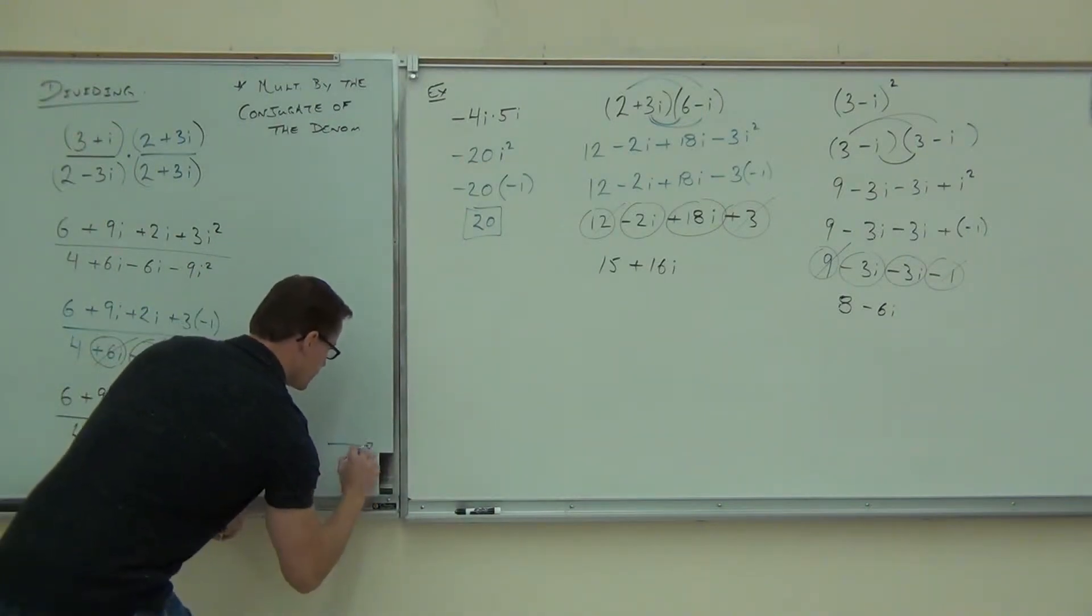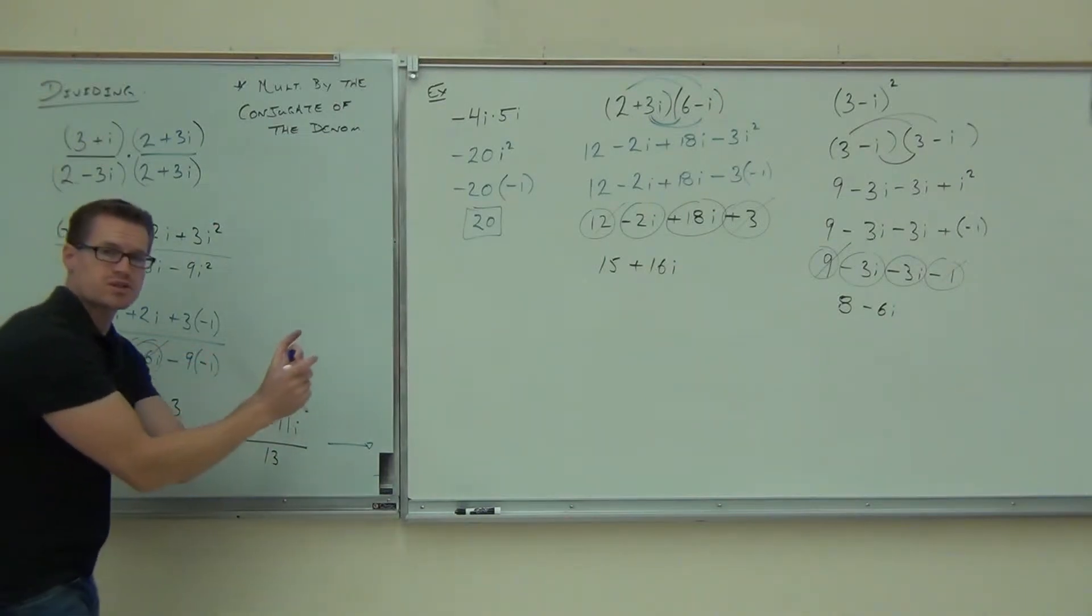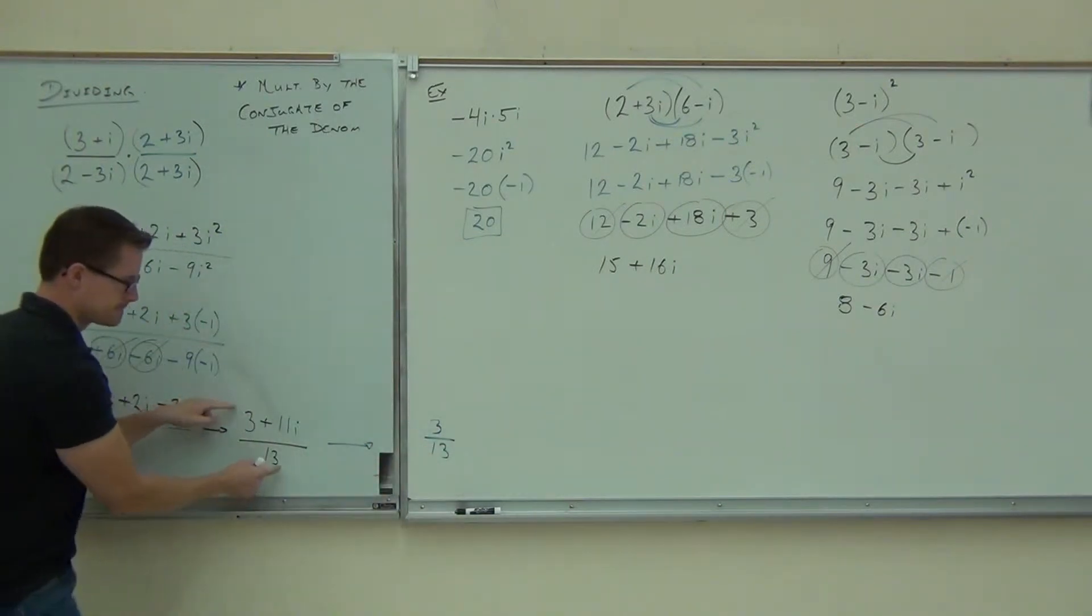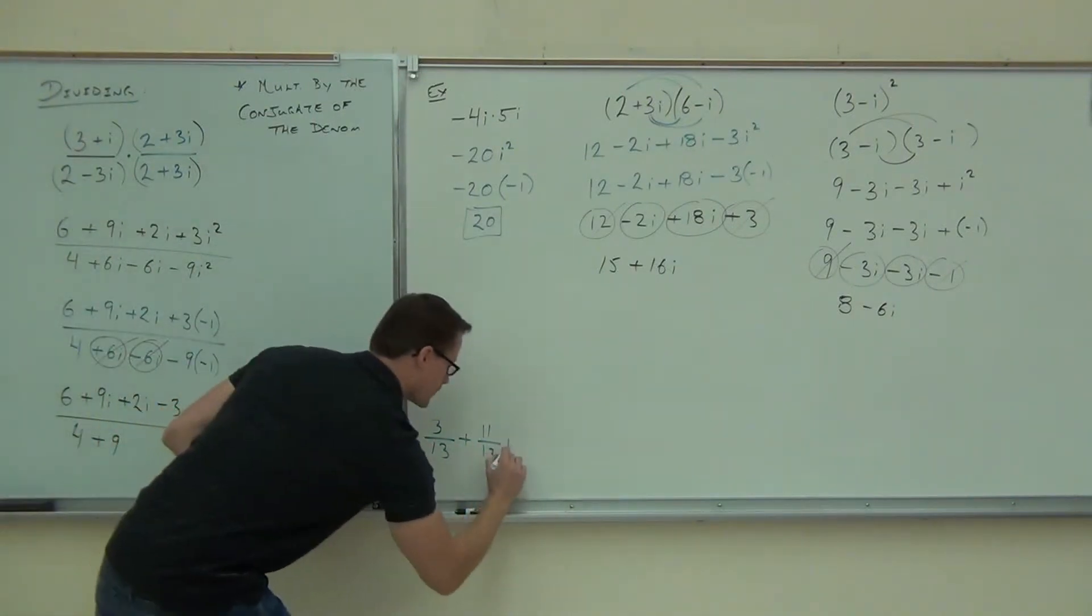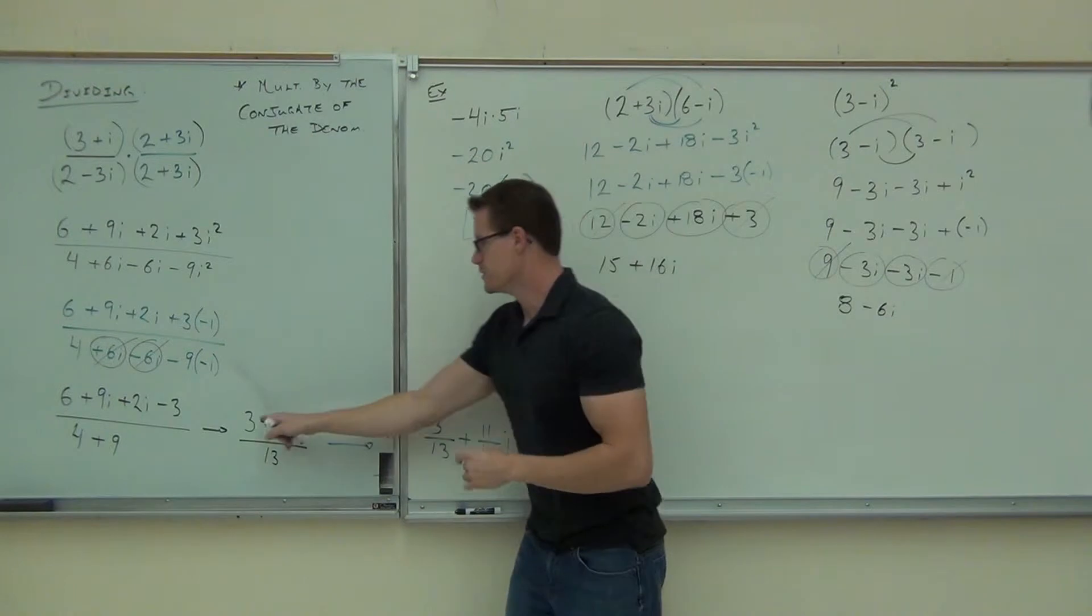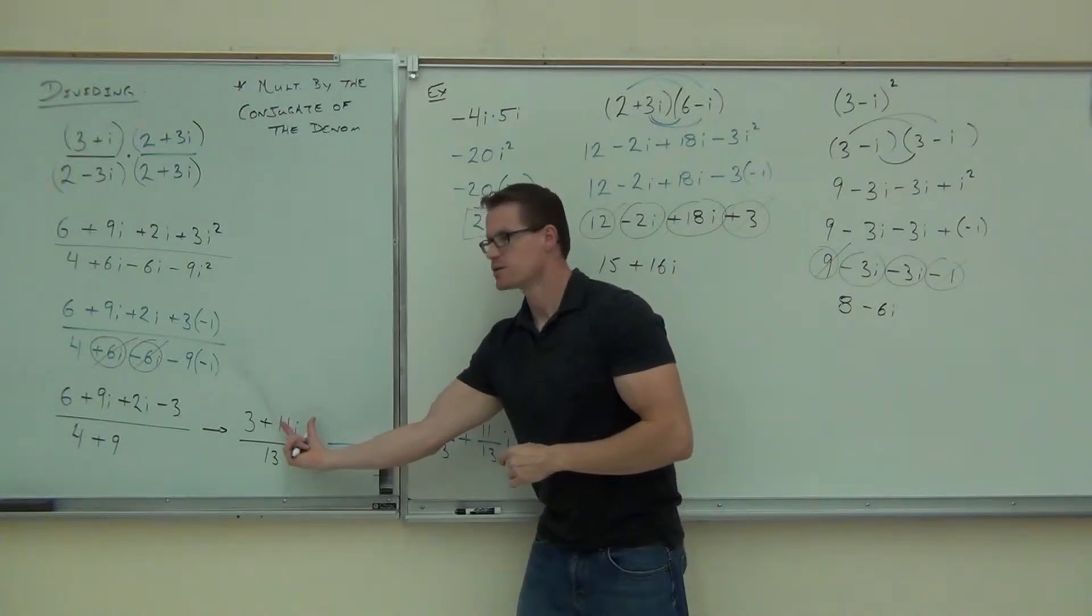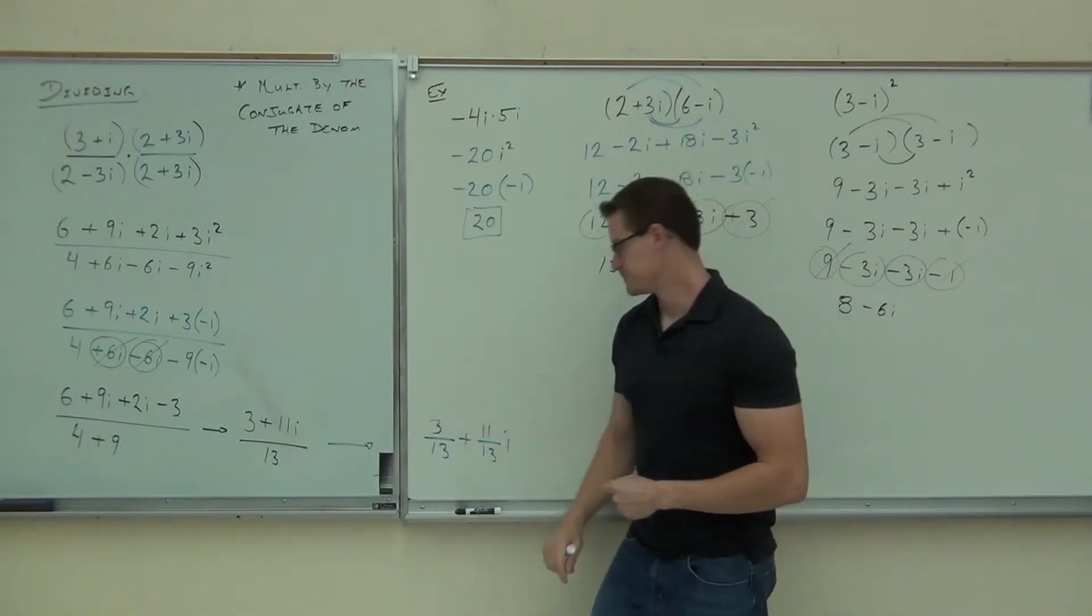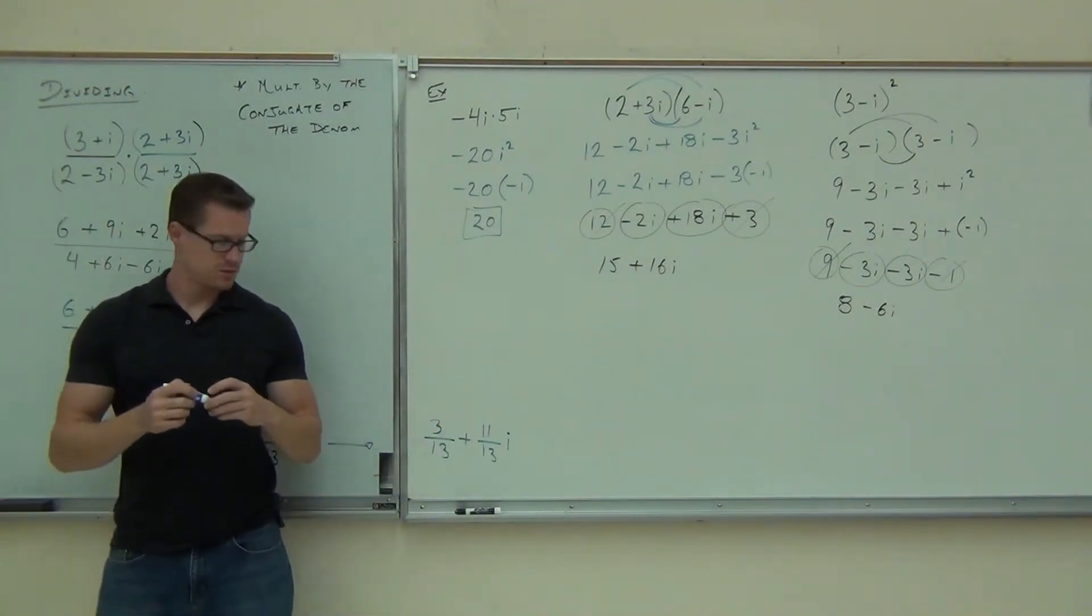You're going to take this and you're going to write this as this fraction plus this fraction. Remember, you can separate a fraction by using the same denominator in two spots. So here you get 3 over 13 plus 11i over 13. That's the complex number. You can always split a fraction up like that where you use the numerator, this first term of the numerator over the denominator, plus or minus the second term of the numerator over the same denominator.